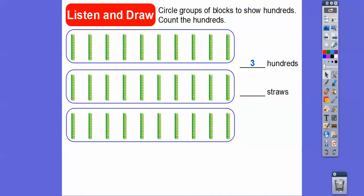So how many straws are there? There's ten plus ten plus ten — thirty straws in this. And this represents the number three hundred.